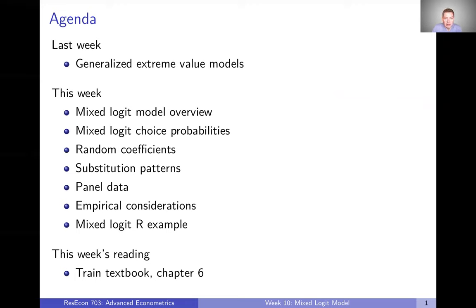Last week, we talked about generalized extreme value models, kind of jumped back into the world of discrete choice models instead of estimation methods. This week, we're going to continue along that path by talking about the mixed logit model, which is going to be the most flexible and general discrete choice model that we talk about in this course. We're going to cover an overview of that model, the choice probabilities, different ways to think about the model — either as having random coefficients or flexible substitution patterns — how to use the mixed logit model with panel data, and some other empirical considerations. Each of those will be one video this week. And then in class, we're going to talk about an example in R of estimating a mixed logit model.